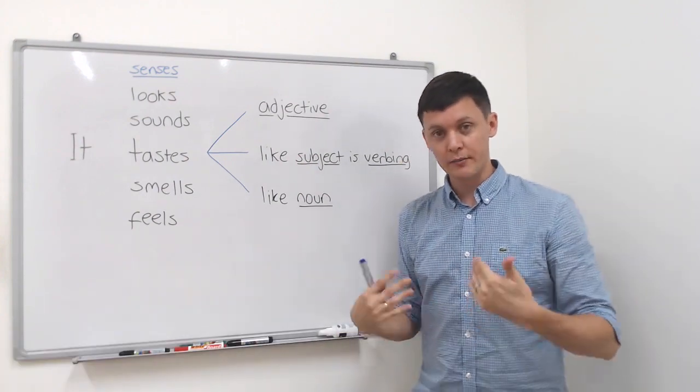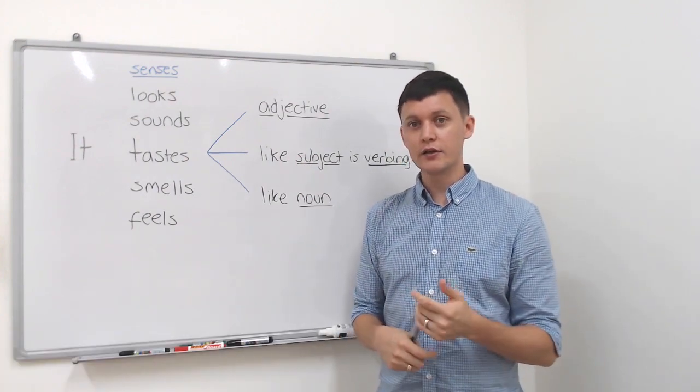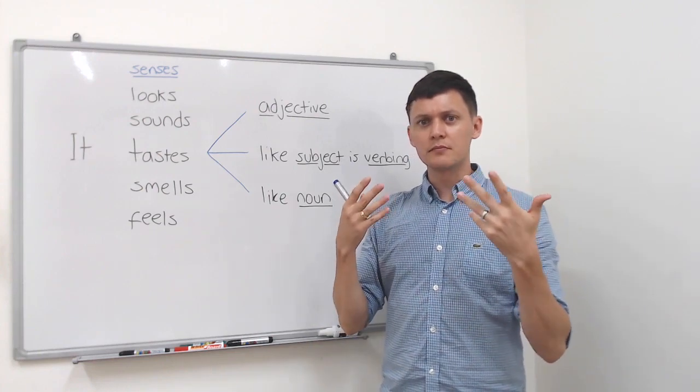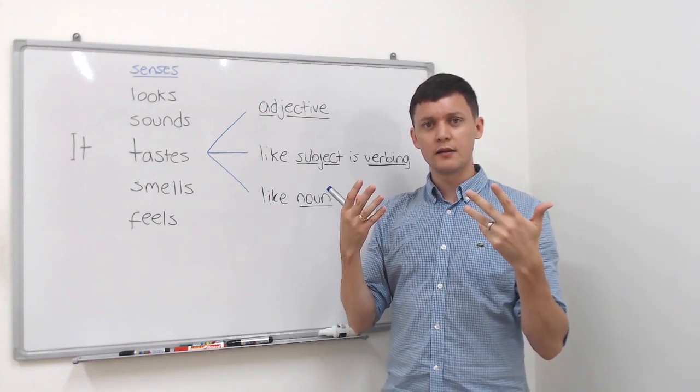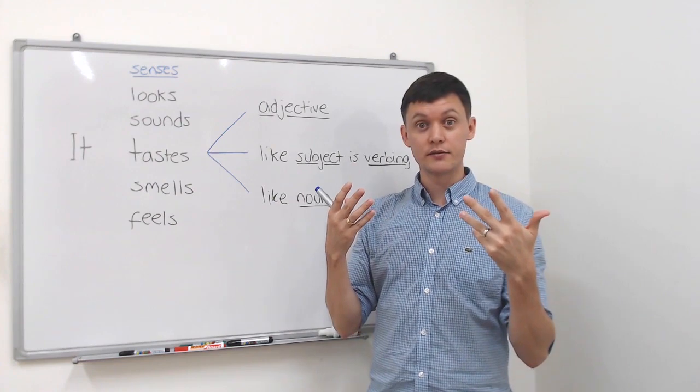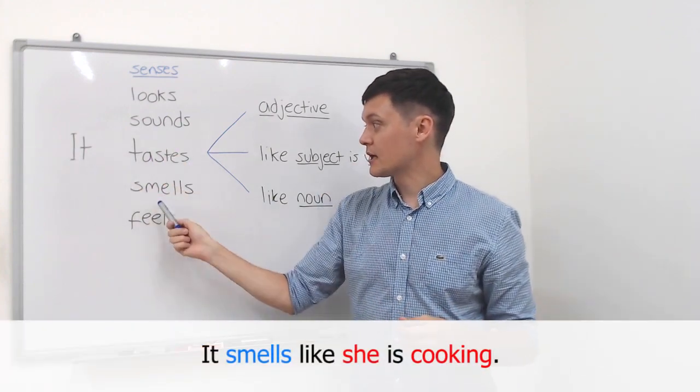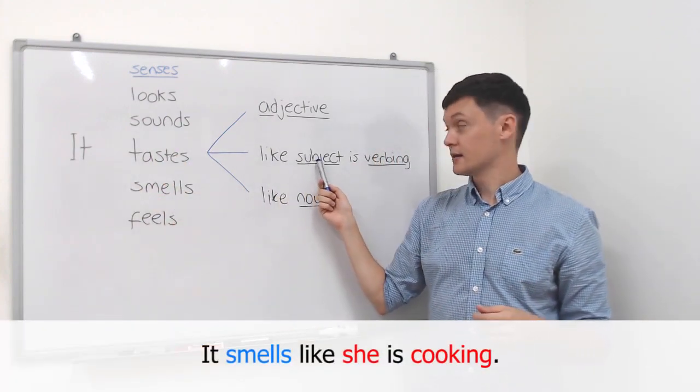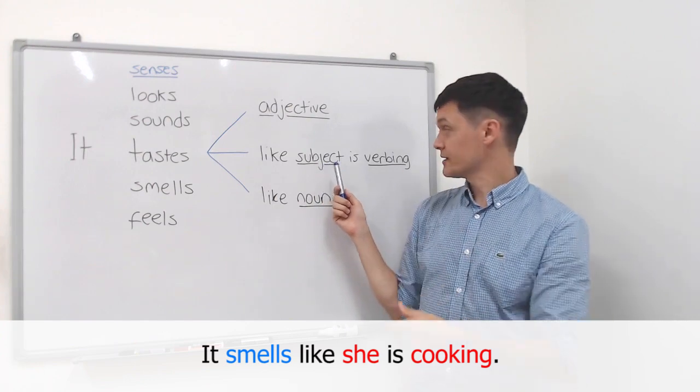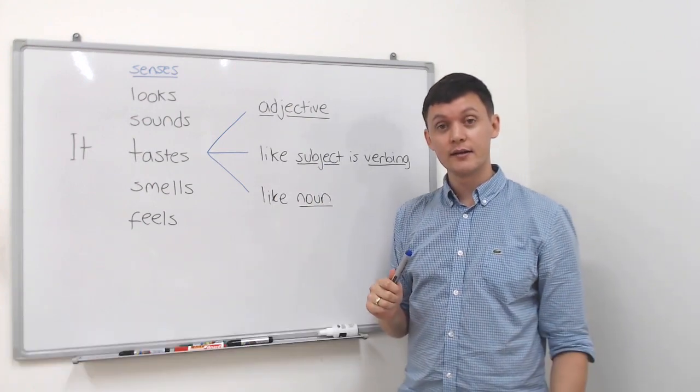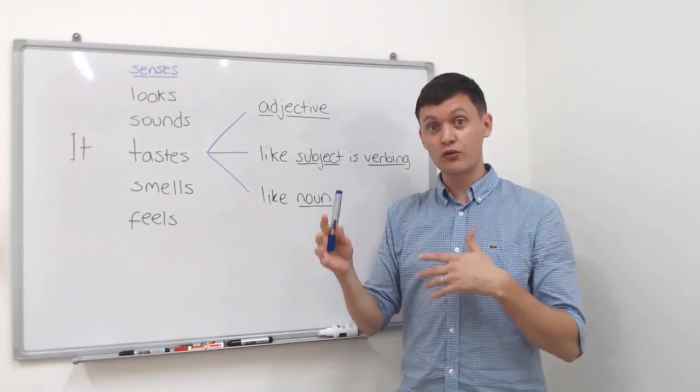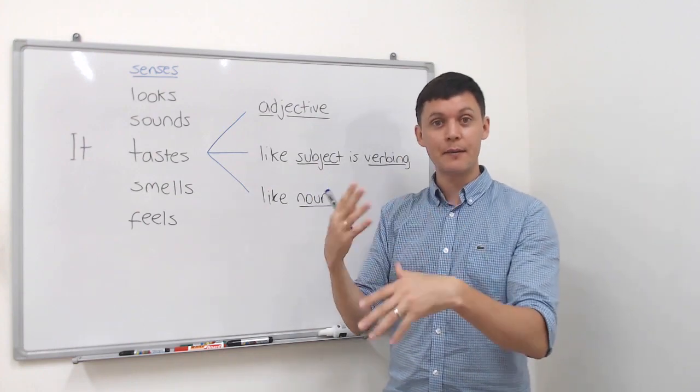Another example. You come into your house and you can smell some cooking smell. Maybe your mum is in the kitchen. So you say it smells like mum or she is cooking. So that's the structure when we talk about an action that's happening now.